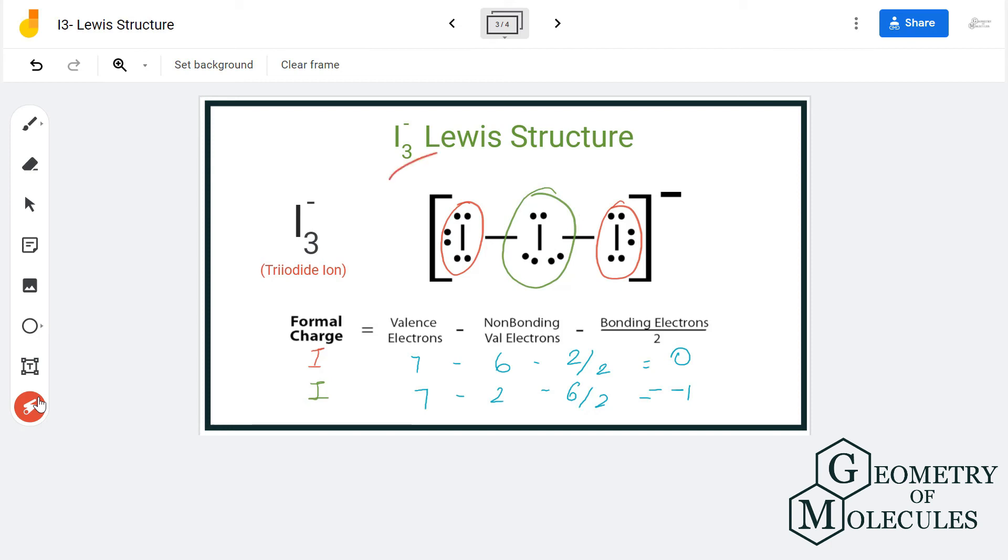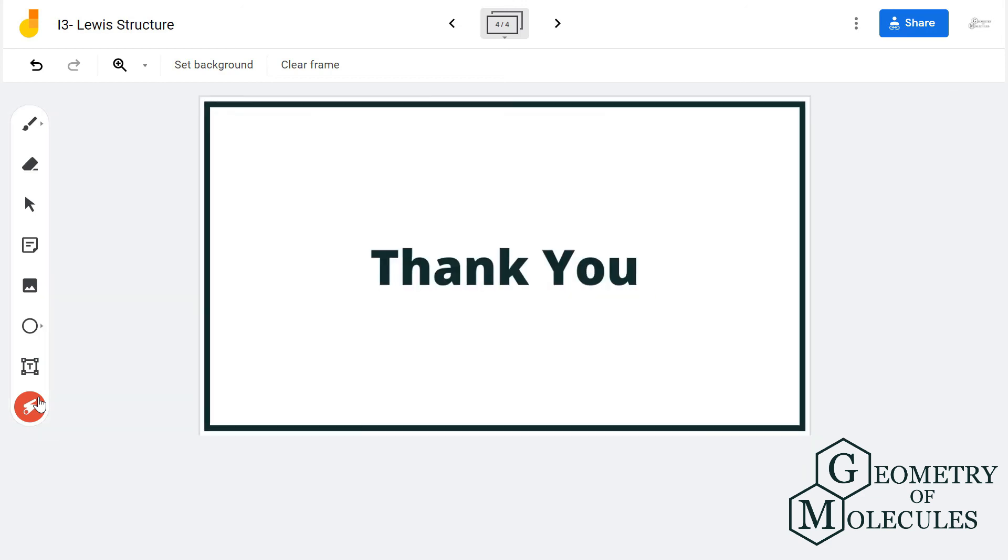So this is the Lewis structure for tri-iodide ion. What you can add is the bracket to show that it is an ion with a negative charge. For more videos on Lewis structure, polarity, molecular geometry, and hybridization of molecules, make sure to subscribe to our channel. Thank you for watching.